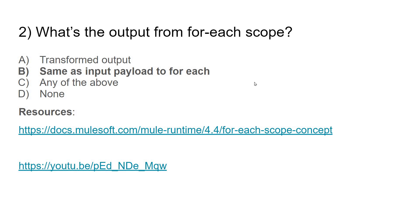The second question is: what is the output from the For Each scope? The options are: transformed output, same as input payload, or none. The answer is: whatever payload you send as input to the For Each scope, that will be the output after the For Each scope. Even if you do some transformation within the For Each, that will not reflect outside the For Each. I have given a few resources — the Mule documentation and a linked video — you can look at those for a better explanation.